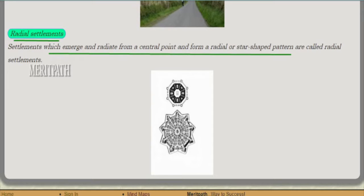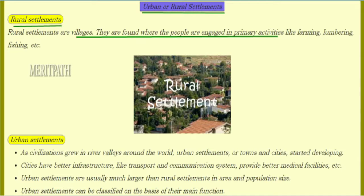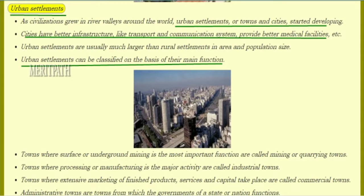Next is urban or rural settlement. Rural settlements mean people settled in villages. These rural settlements are found where people are engaged in primary activities such as farming, lumbering, and fishing. This image represents a rural settlement.